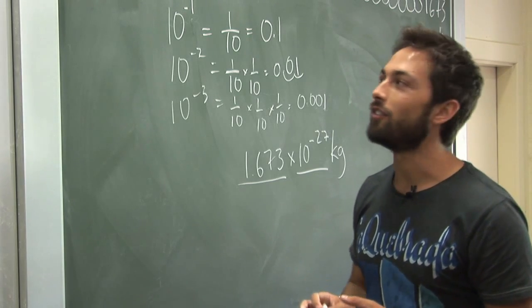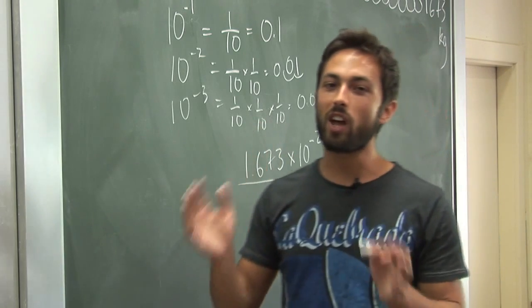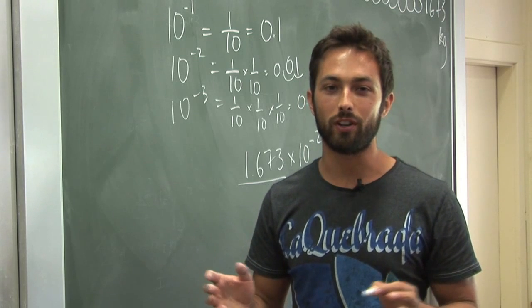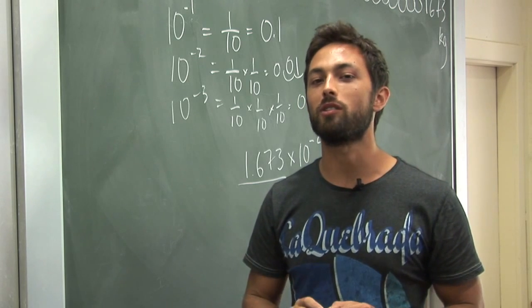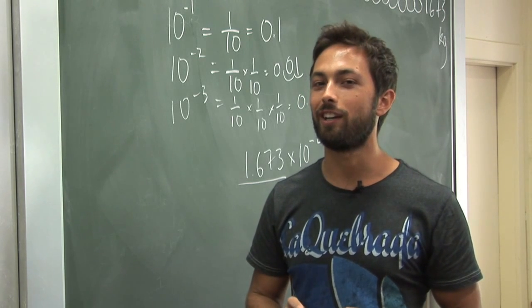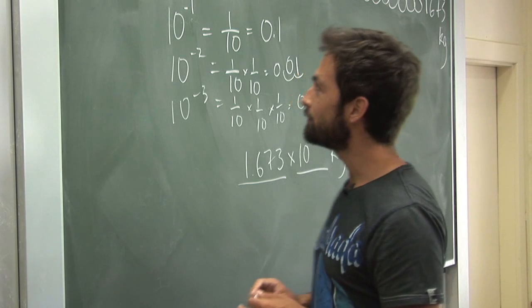So as a challenge question, to see if you've understood it, if the sun were made entirely of protons, how many protons would there be in the sun?